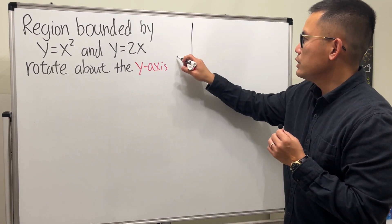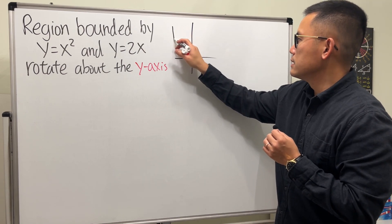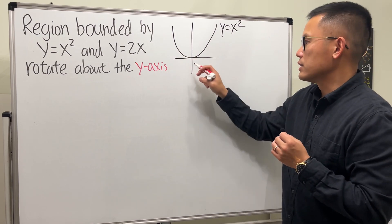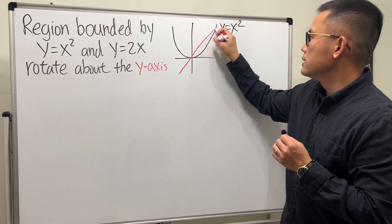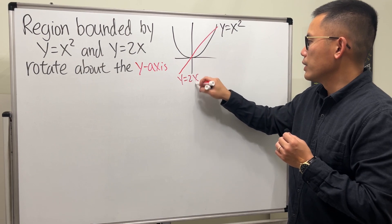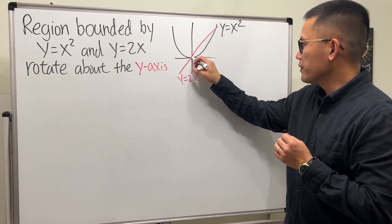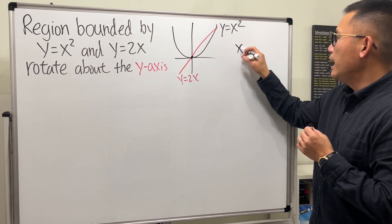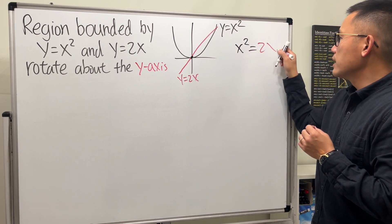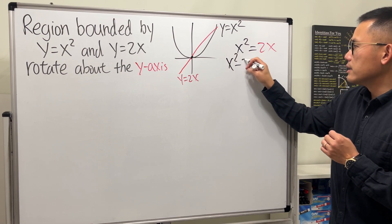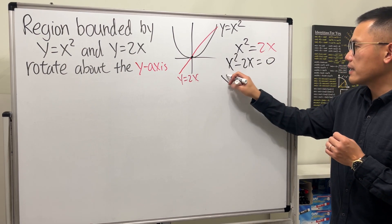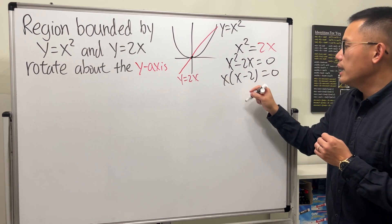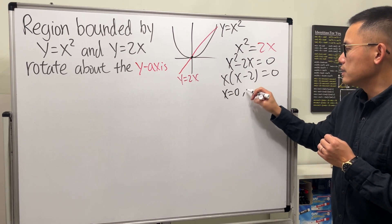First, let's look at the picture. y equals x squared looks like a parabola, and y equals 2x is just a line. Let's find the points of intersection — that's zero, and setting x squared equal to 2x gives x squared minus 2x equals zero, so x equals zero or x equals 2.